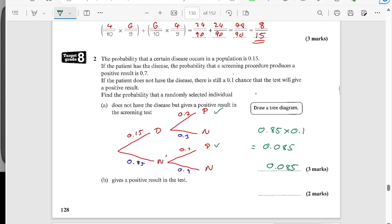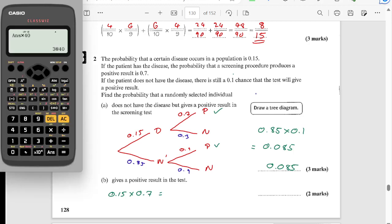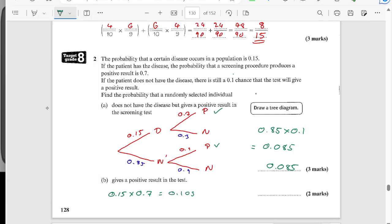Part B gives a positive result to the test. So we've already worked out one version, so we're going to do that one as well. So 0.15 times by 0.7 is going to be, let's just get the calculator for that, 0.15 times by 0.7, 0.105. And to that we'd need to add the other probability, so plus 0.085. And then that's going to give me 0.19.